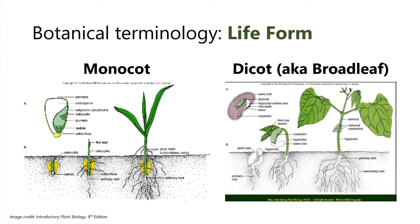The first thing we'll cover is life forms — specifically monocots versus dicots. Before we can make that distinction, we need to go over what a cotyledon is. A cotyledon is an embryonic leaf in seed-bearing plants; plants have one or more of them, and they are the first leaves to appear from a germinating seed. The two main groups are monocots and dicots.